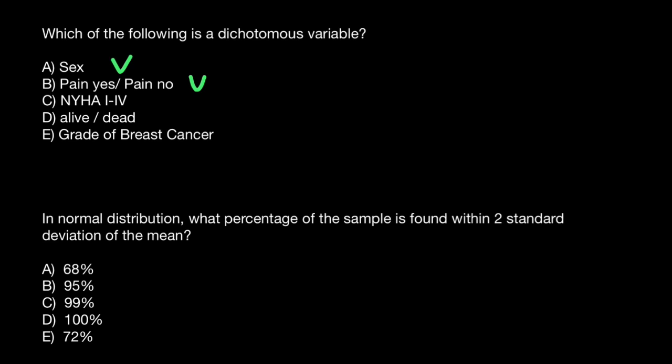and class four severe limitations. So this is not a dichotomous variable. Next, alive and dead. Again, two variants, that means dichotomous variable.